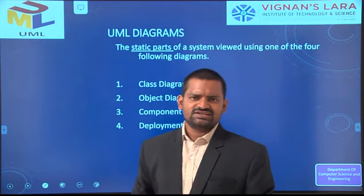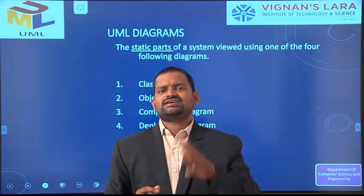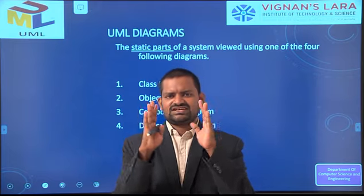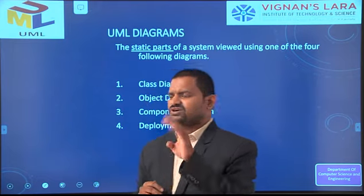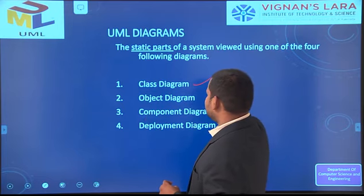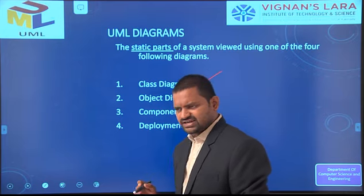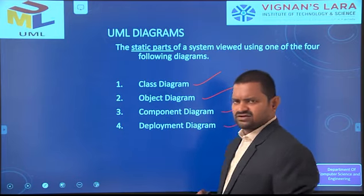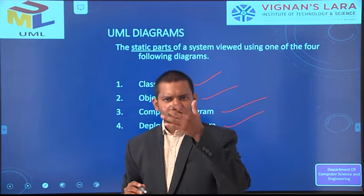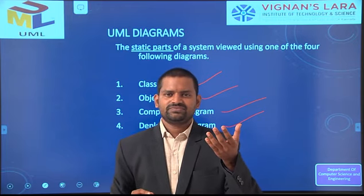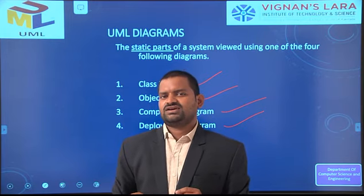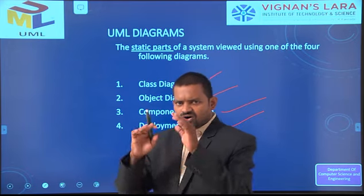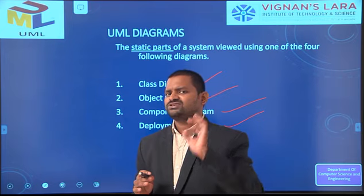Static diagrams represent the skeleton of the system, showing only the structure. Static diagrams consist of four diagrams: class diagram, object diagram, component diagram, and deployment diagram. All of these belong to structural diagrams.